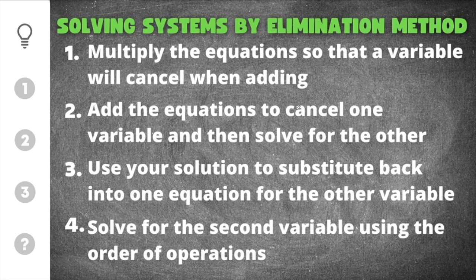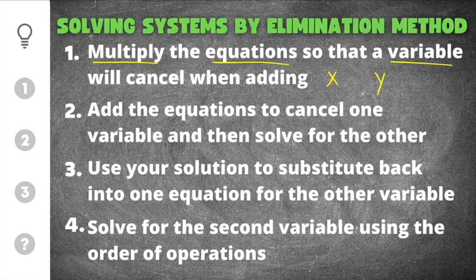There are four important things we need to remember when solving systems by elimination. The first step is that you're going to multiply the equations so that a variable will cancel when adding. It doesn't matter which variable cancels — it could be the x variable or the y variable. What is important is that once you add, one of them will be eliminated, which is where the elimination method gets its name. The next thing you're going to do is add the equations to cancel one variable and then solve for the other.